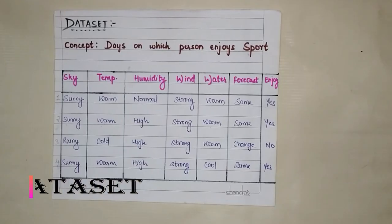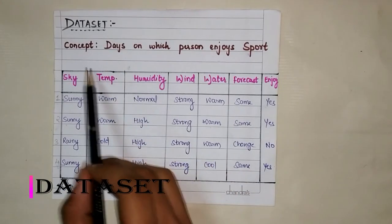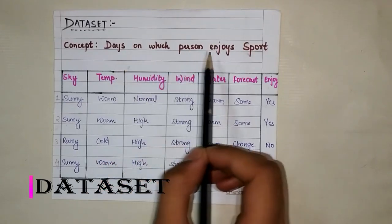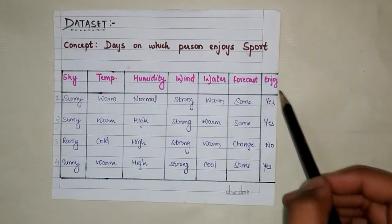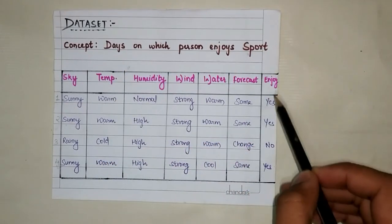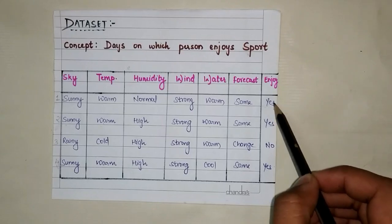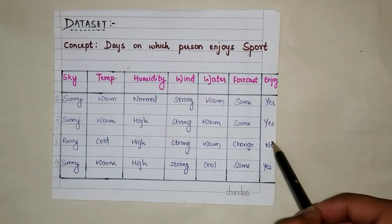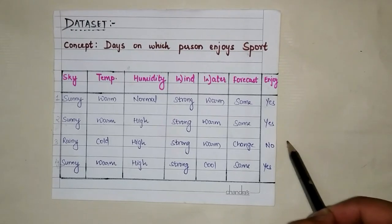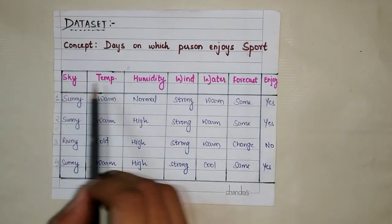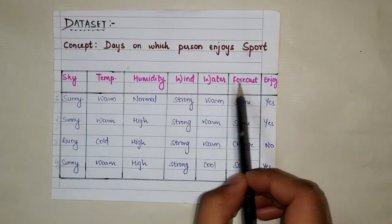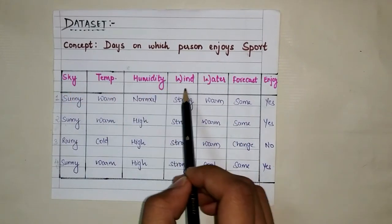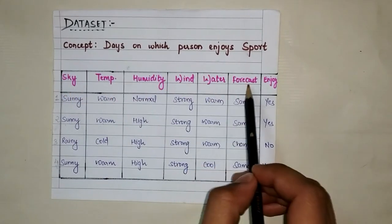Now let's understand our dataset. The concept we are learning is the days on which a person enjoys sport. The target attribute is yes or no — yes is a positive example and no is a negative example. We have six attributes: sky, temperature, humidity, wind, water, and forecast.